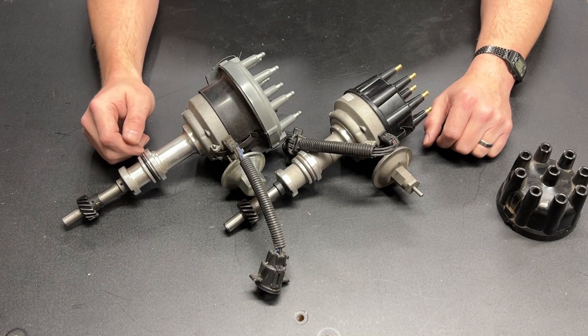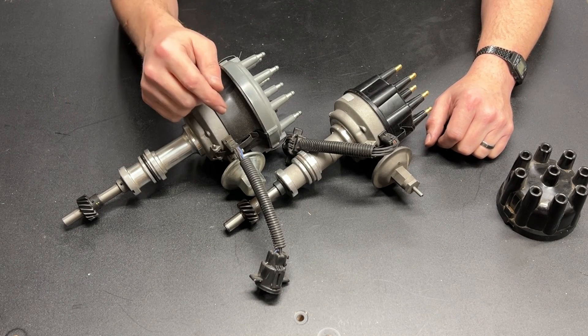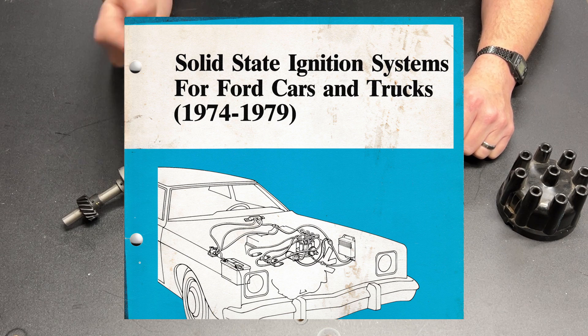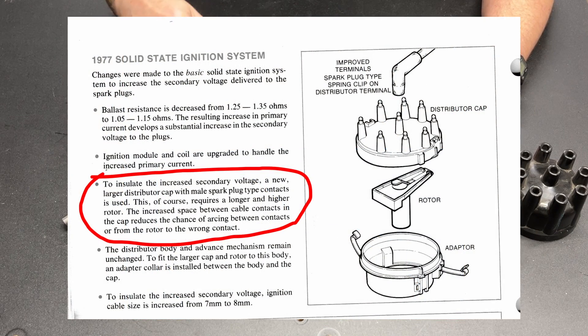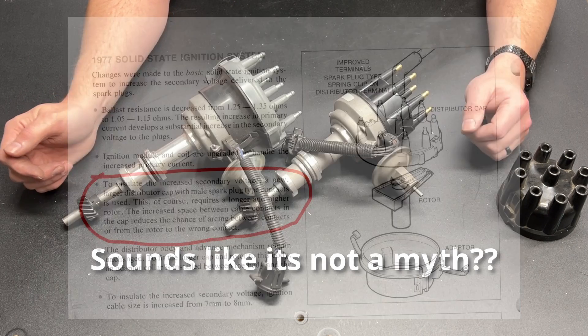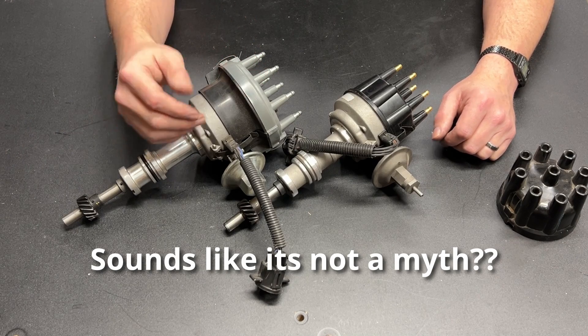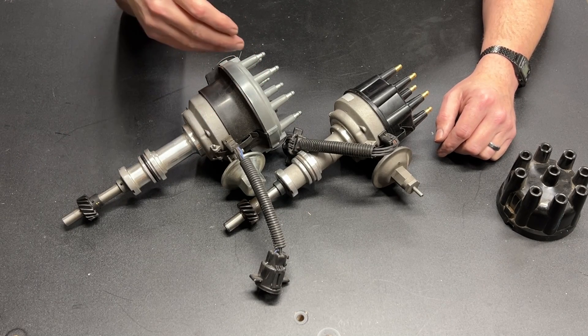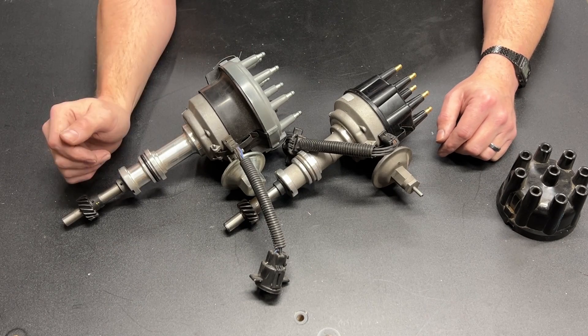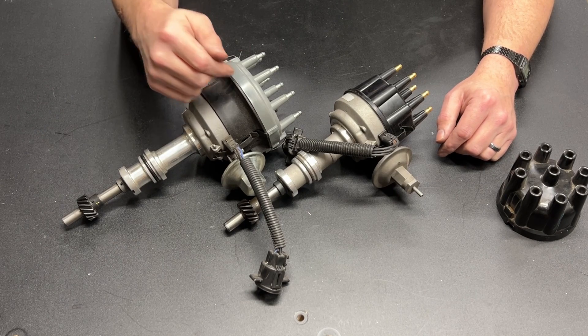So why did they do that? I was given a Ford technician training manual that explains that yes, this bigger cap was to eliminate crossfire and tracing. Crossfire is what happens on the outside, tracing is what happens on the inside. So if the manual from Ford says that crossfire is why they went bigger, why are we even here? This clearly must be better. Well, better is a relative term.